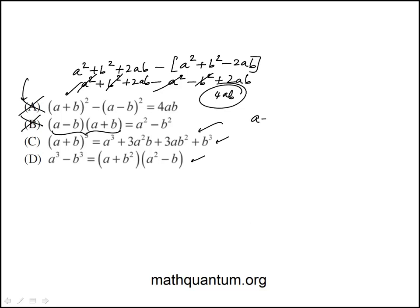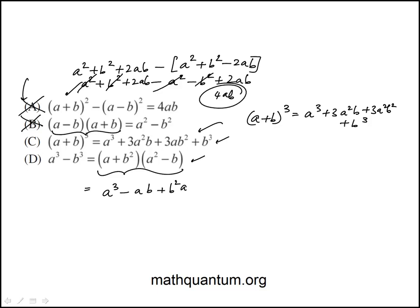That one is the cubic expansion — a plus b cubed is indeed that. If you don't recognize this, you have to do the expansion. When you multiply it out, you get terms including a²b and ab² remaining, and you'll notice that this is not equal to a³ minus b³ because those extra terms are not equal to zero. So the answer is D.